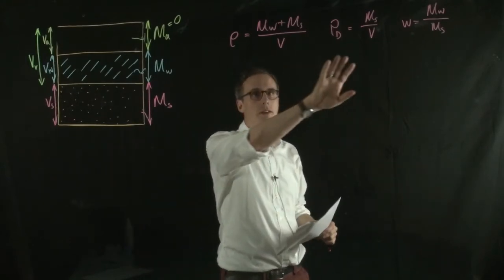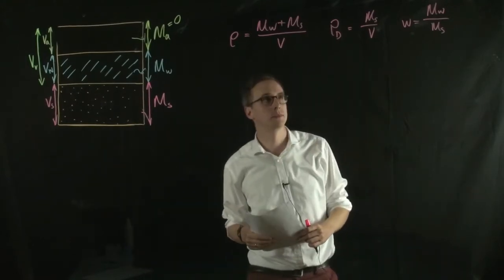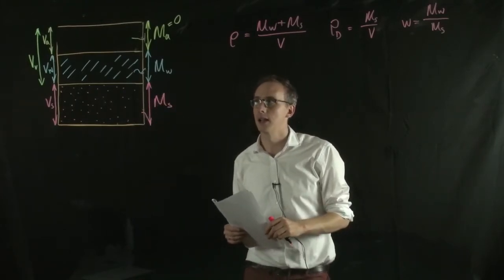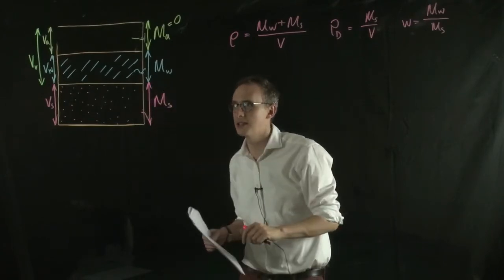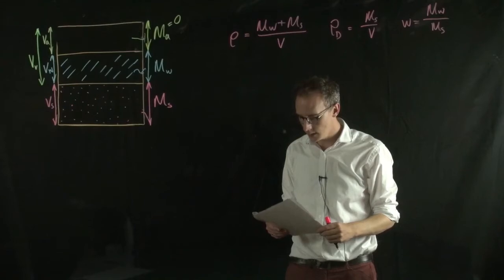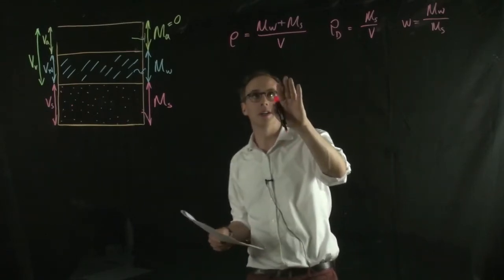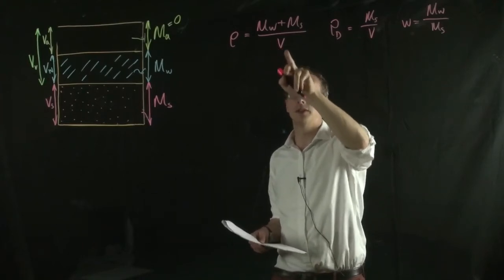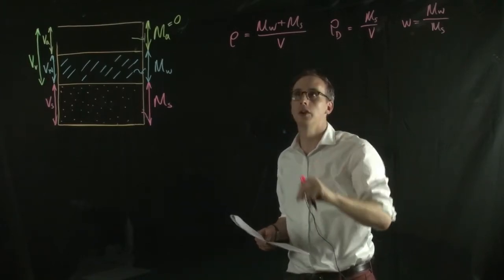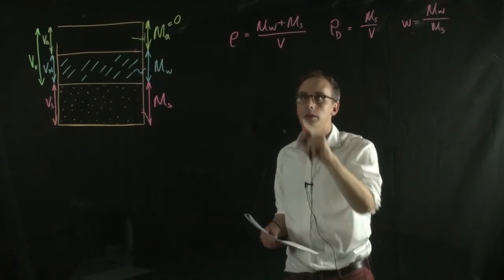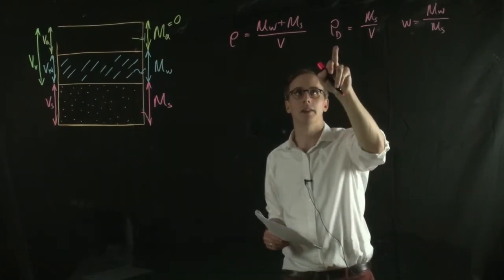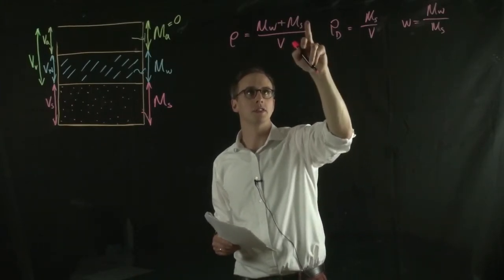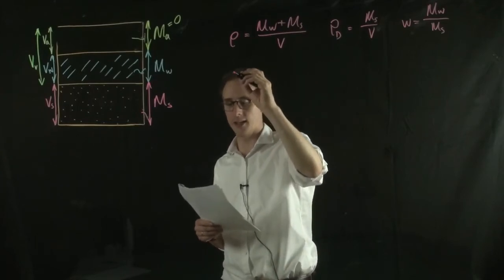Okay, so I've wrote the three relationships out here in terms of their three-phase base units on the three-phase model. Now, the first thing that we can do is remove this V value, the total volume value, by dividing the bulk density by the dry density. And we can see that if we do that, this V moves onto the top here, and it cancels out.